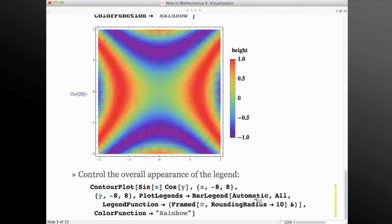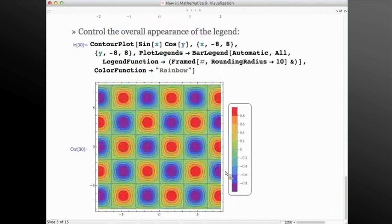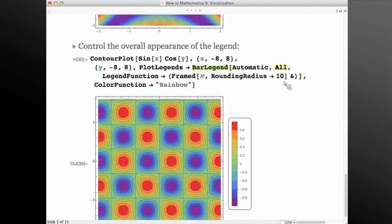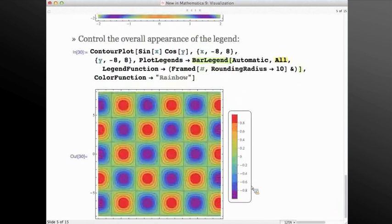And finally, we have an option, a functionality for exerting a lot of control over how things appear. So here I'm going to specify a legend function, which is applied to the legend as a wrapper. So in this case, I'm going to give it a frame, and I'm going to specify a rounding radius so that the corners on that frame are rounded off and not hard and square. And also, in this case, I've specified that I want all for the contours for this contour plot, and now we're picking up all of the contours and not just the automatically filtered ones.